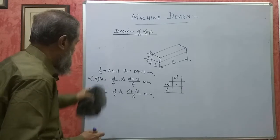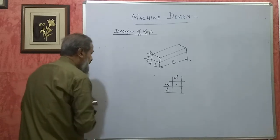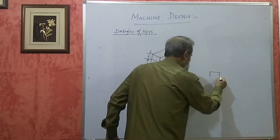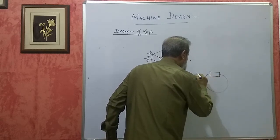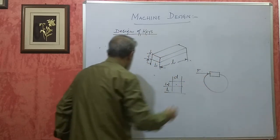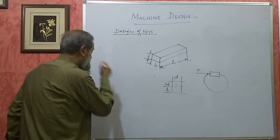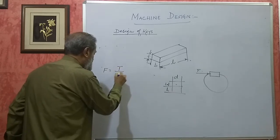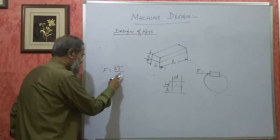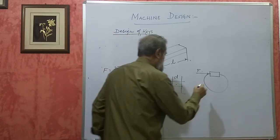Once a key is designed using these dimensions, we have to check it. There are two ways in which a key can fail. The key sits partly in the shaft and is subjected to a tangential force. That force F is equal to T divided by D/2, or equivalently 2T divided by D, where T is the torque transmitted by the shaft.